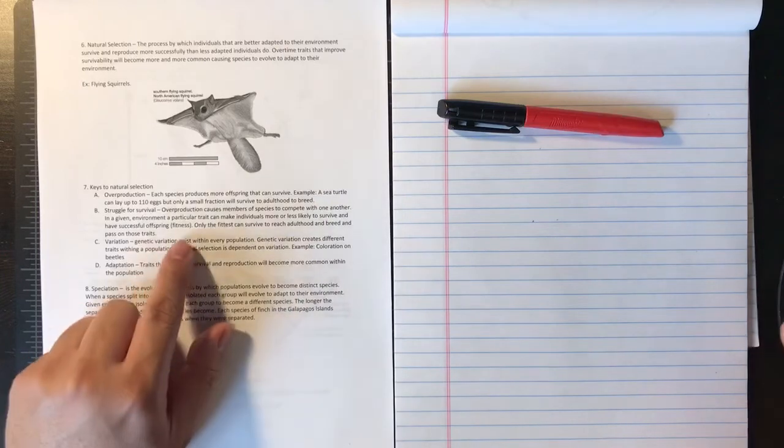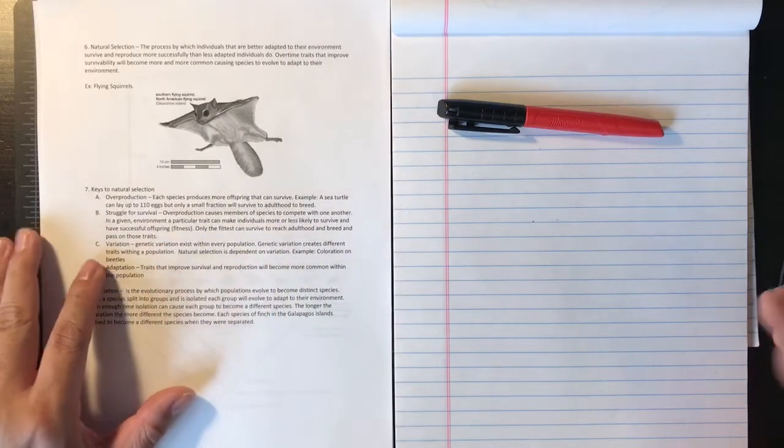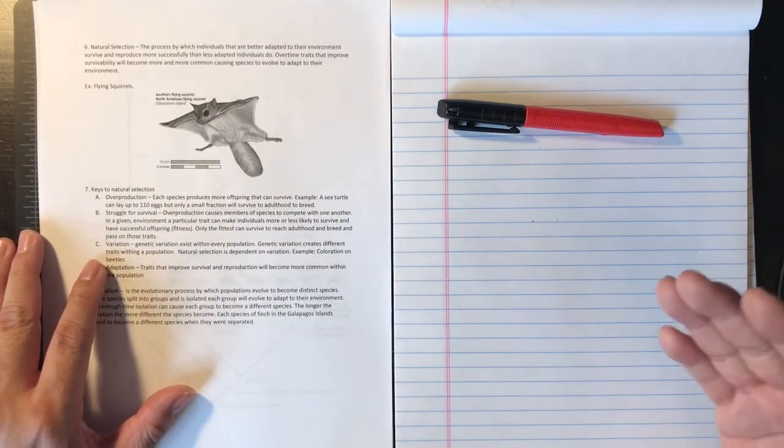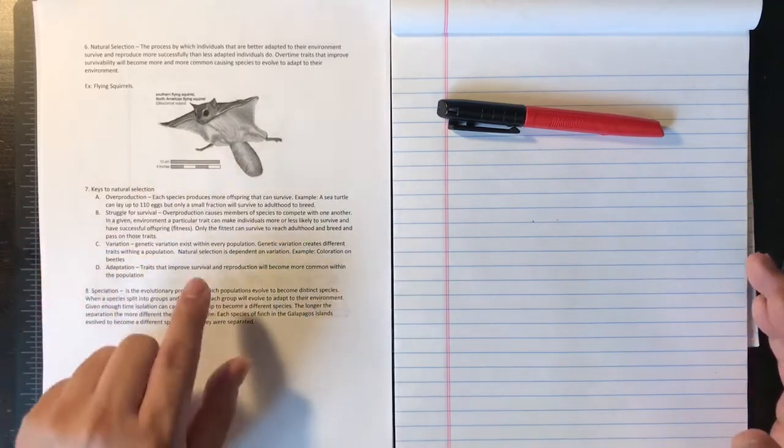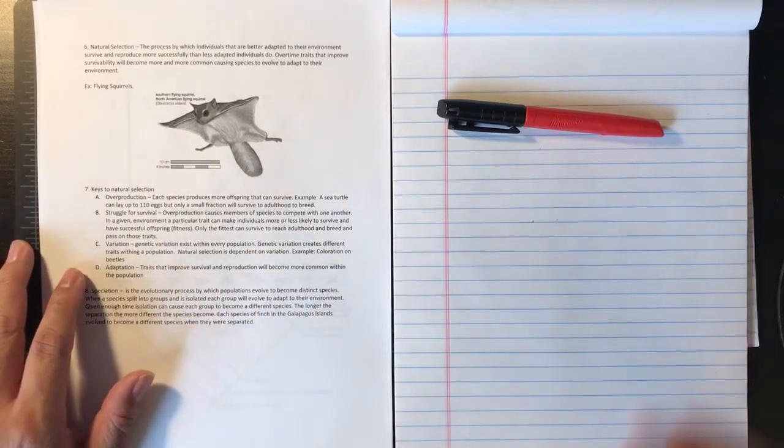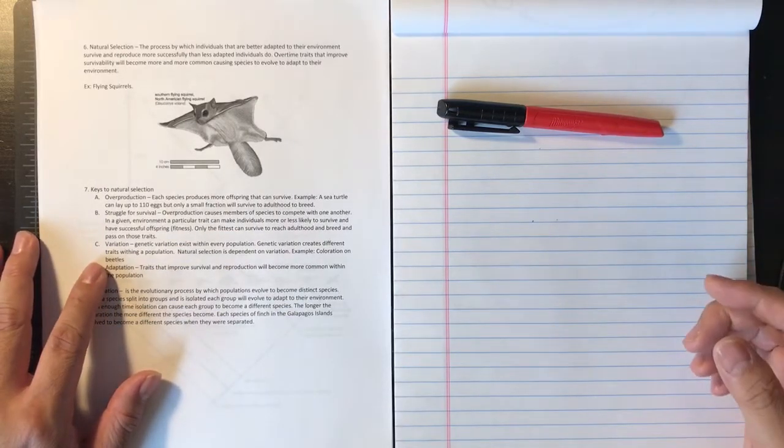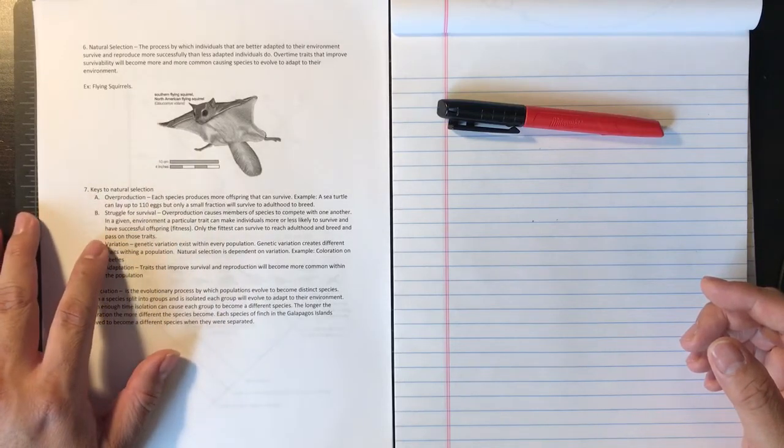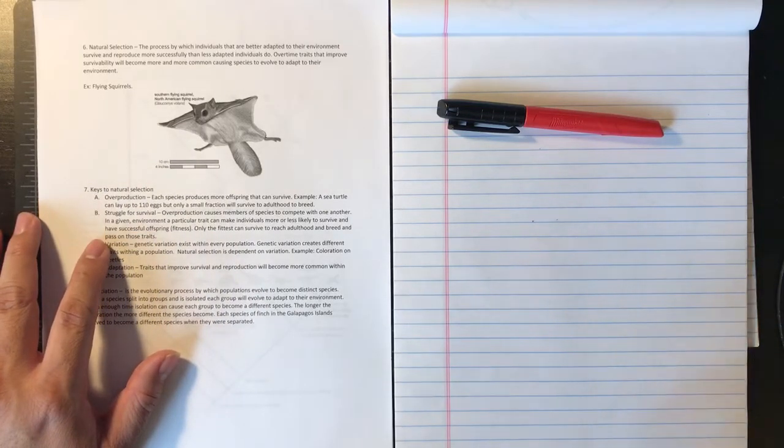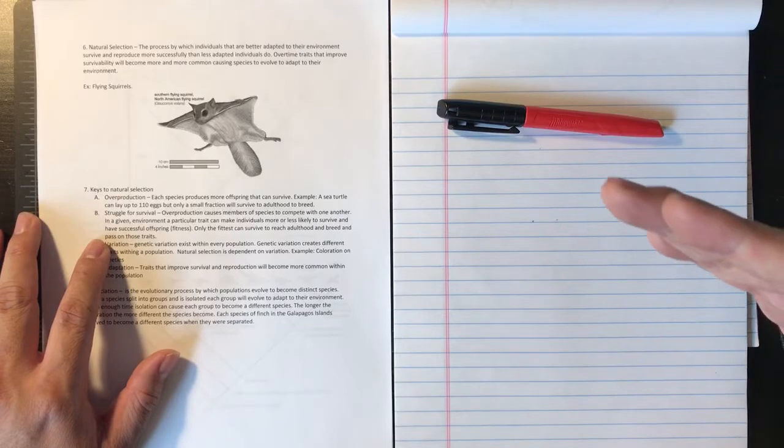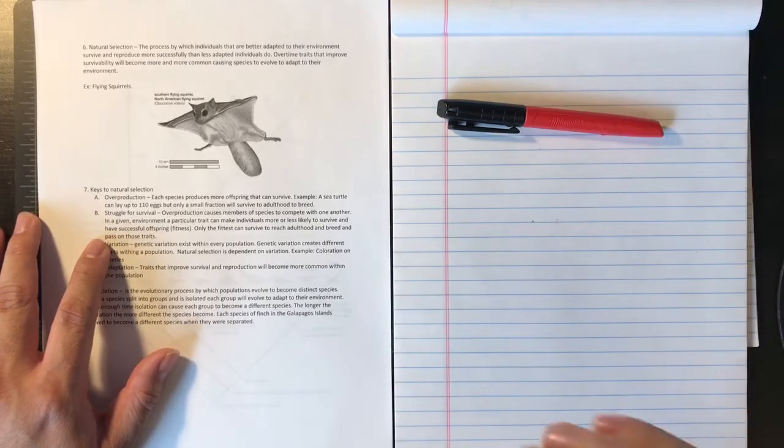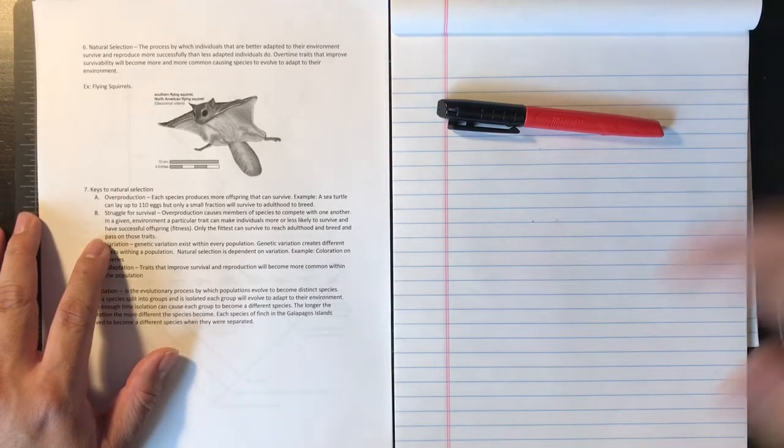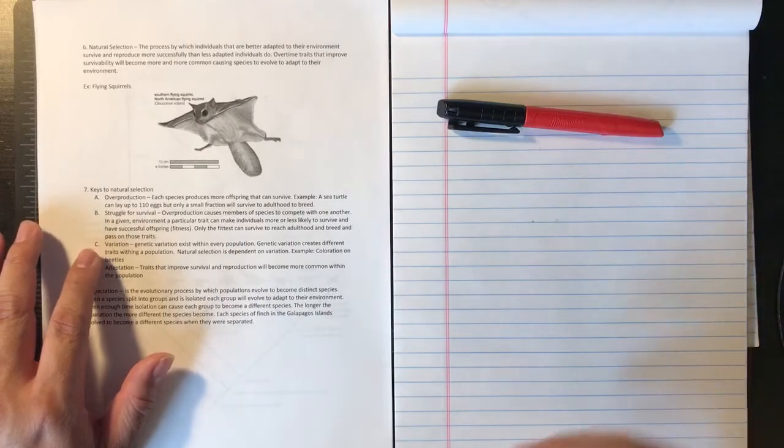We call this fitness. The fitter the organism, if it has traits that allow it to survive, it will survive. Therefore, only the fittest can survive to reach adulthood and breed to pass on those traits. Organisms that have traits that don't allow them to survive will die. So that particular trait gets cut off. Only the successful traits get pushed on and moved on to the next generation of offspring and so on and so forth.